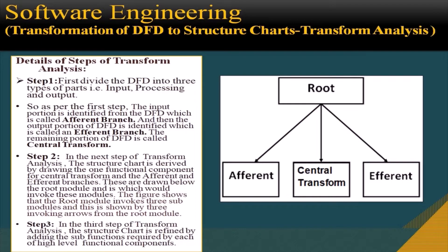Looking at the detailed steps of transform analysis: in step 1, we divide the DFD into three parts — input, processing, and output. The input portion is identified from the DFD and is called the afferent branch. The output portion of the DFD is identified and is called the efferent branch. The remaining portion of the DFD is called the central transform. In step 2, the structure chart is derived by drawing one functional component for the central transform and for the afferent and efferent branches.